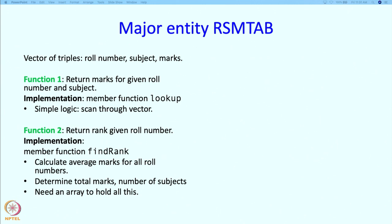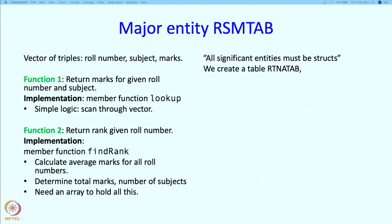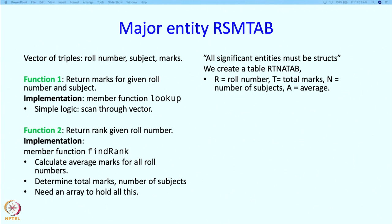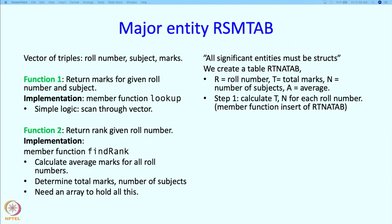We need an array to hold this, and our principle is that all significant entities must be structs. So we will create another table — let us call it RTNA tab — where R denotes the role number, T denotes the total marks, N is the number of subjects, and A is the average. We are going to use this table to calculate the average marks for a given role number. In step 1, we will calculate T and N, and this is done by the member function insert.